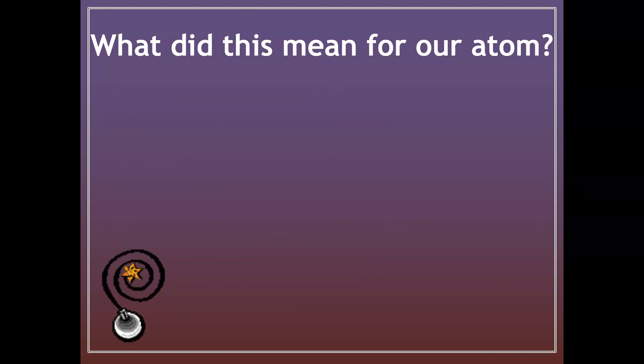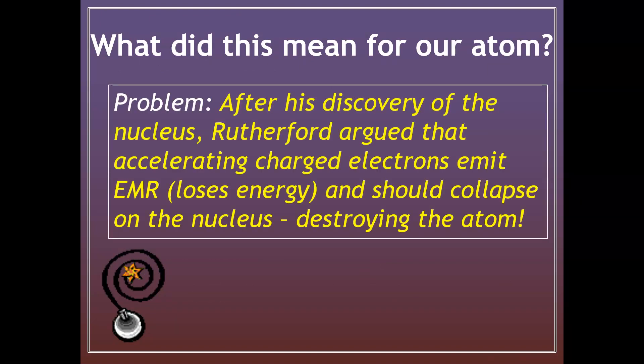What did this mean for our atom? This was a serious problem uncovered because after the discovery of the nucleus, Rutherford argued that accelerating charged particles, such as electrons, emit electromagnetic radiation, lose energy, and should technically collapse into the nucleus, destroying the atom. We obviously know this doesn't occur because matter does not self-destruct, so we needed to come up with another explanation.